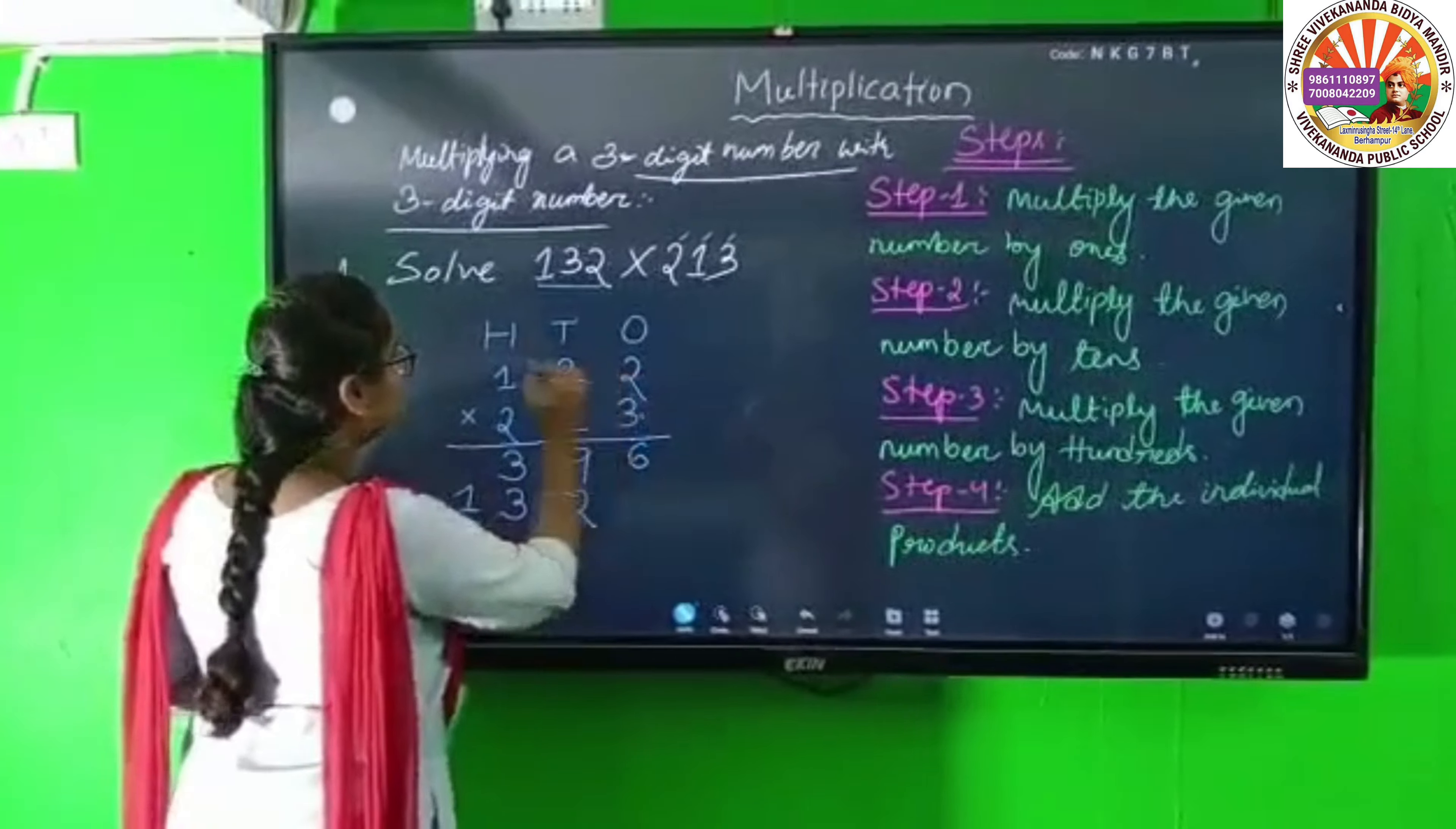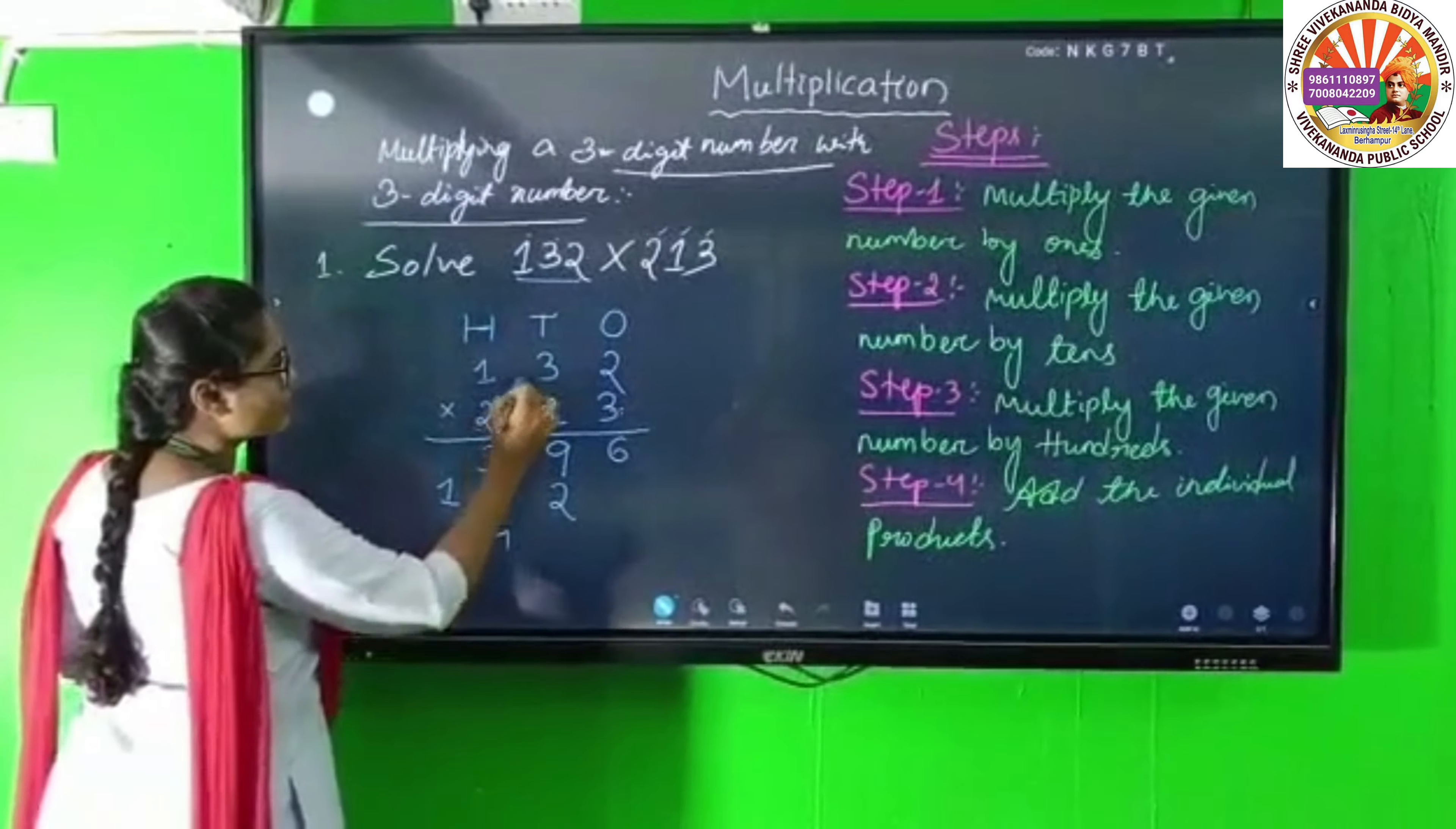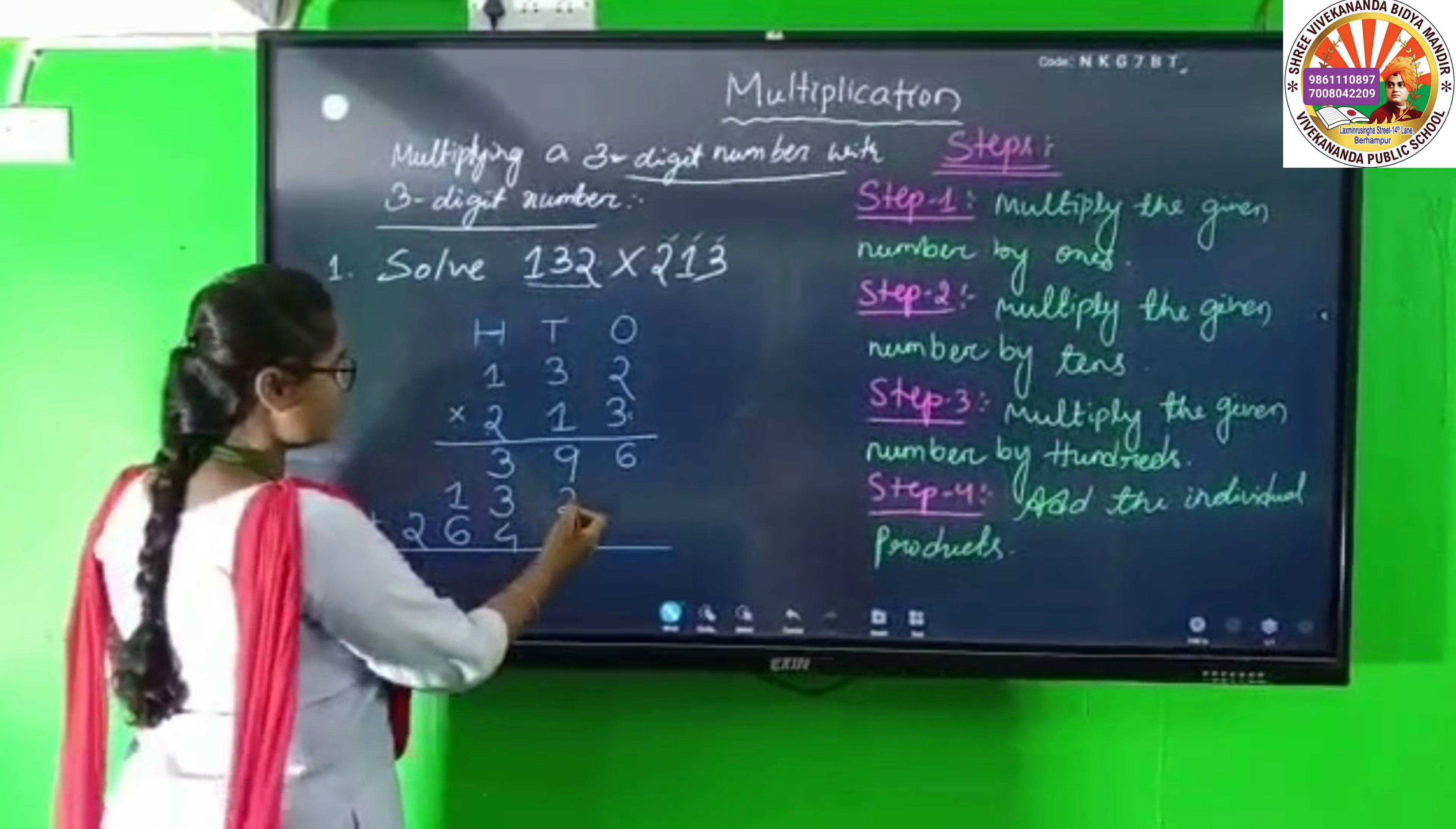Now for hundreds. 2 times 2 is 4, 2 times 3 is 6, 2 times 1 is 2. We get 264.